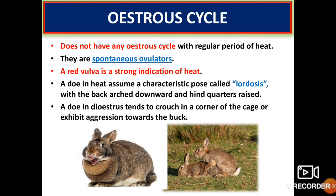Regarding the estrous cycle, rabbits don't have any definitive estrous cycle with a regular period of heat — they are spontaneous ovulators. A red vulva is a strong indication of heat. A doe in heat assumes a characteristic posture called lordosis, with the back arched downward and the hindquarters raised. A doe not in heat tends to crouch in a corner of the cage or show aggression towards the buck.